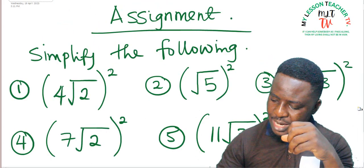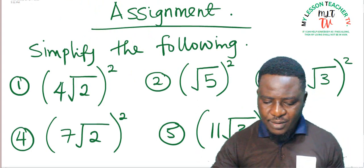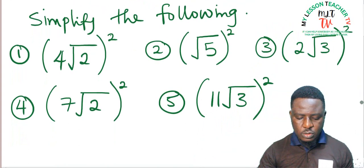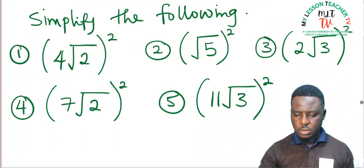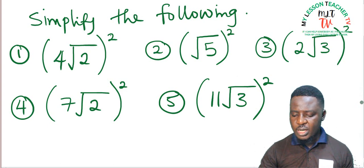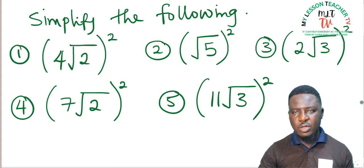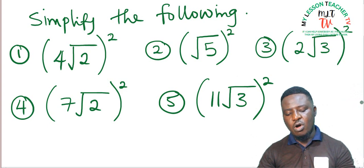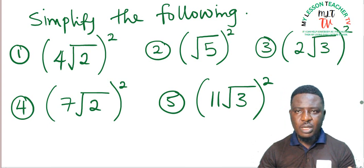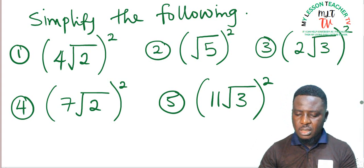Before we go, let me give you an assignment. Simplify the following: 1) (4 root 2) squared; 2) (root 5) squared; 3) (2 root 3) all squared; 4) (7 root 2) all squared; 5) (11 root 3) all squared. All you need to do is square each term — both the rational and irrational parts in the brackets — and then simplify. Thank you for being part of today's class. See you in our next class where we shall be looking at division in surds.